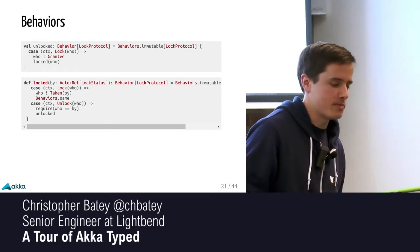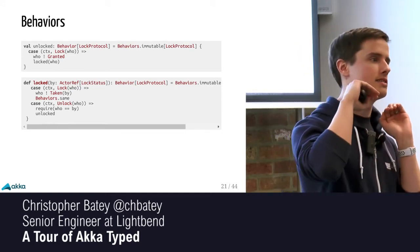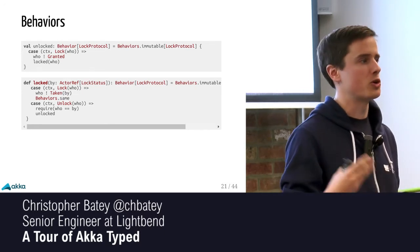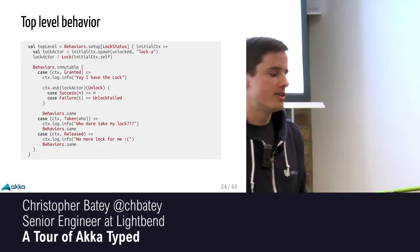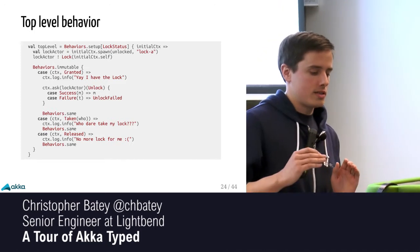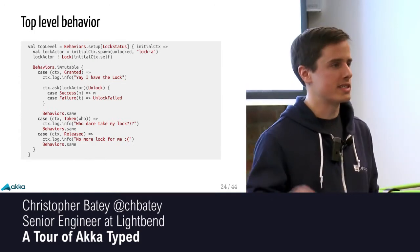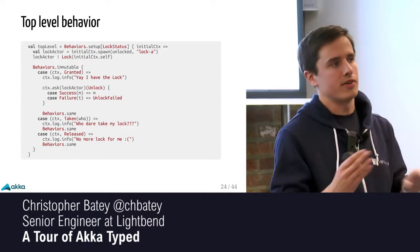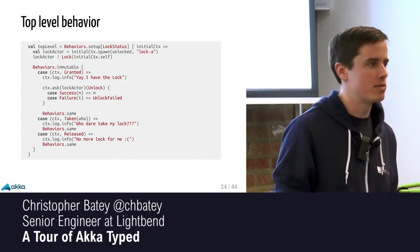So how does the protocol change in Akka Typed? We can no longer use case objects for the lock protocol because we need to actually send the actor ref explicitly. Any time you want a response from an actor, you're going to have to send in an actor ref so it can respond, and that will be appropriately typed for its response protocol. The same has happened for unlock. The lock status protocol doesn't change much, but the actor ref it includes now has a type parameter — it's typed to LockStatus — so we can't randomly talk to the lock holder and say please release the lock.